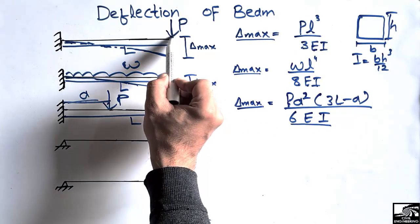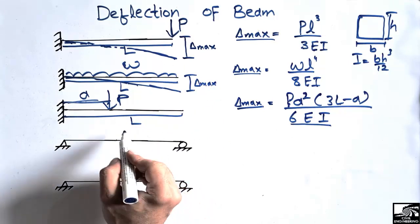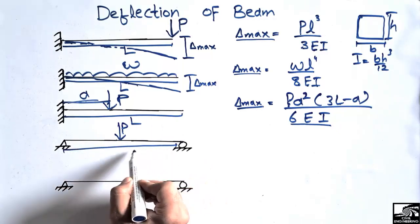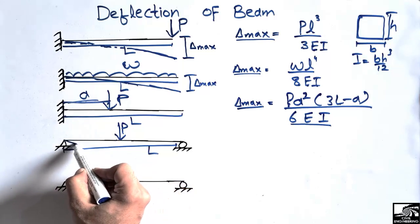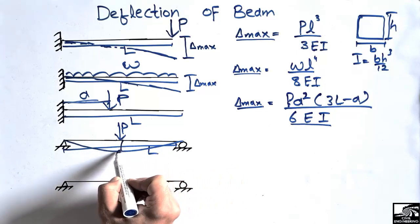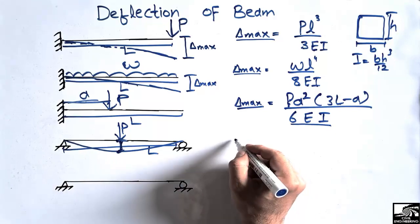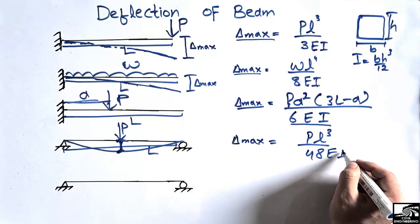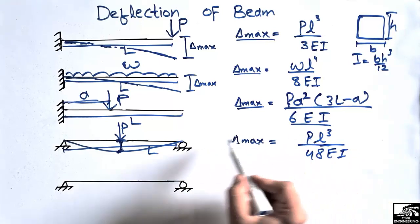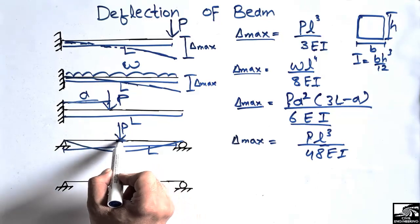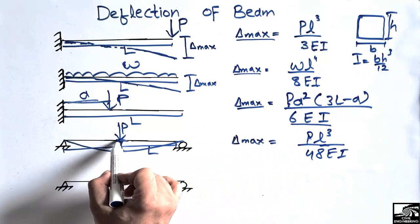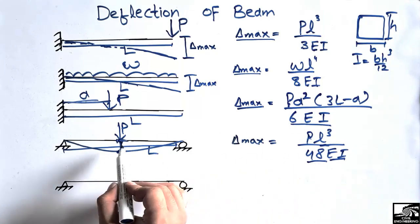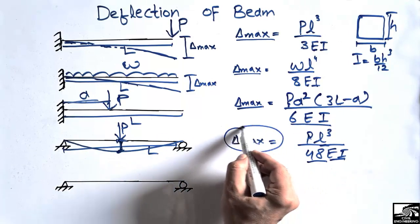Now for the simply supported beam with a concentrated load P acting at the center of the beam of total length L, the maximum deflection occurs at the midpoint. The formula for maximum deflection of a simply supported beam with a central point load is: δ_max = PL³ / 48EI. This formula is only valid when the load is acting at the center of the beam. The factor 48 and the EI terms represent the geometric and material properties of the simply supported beam.